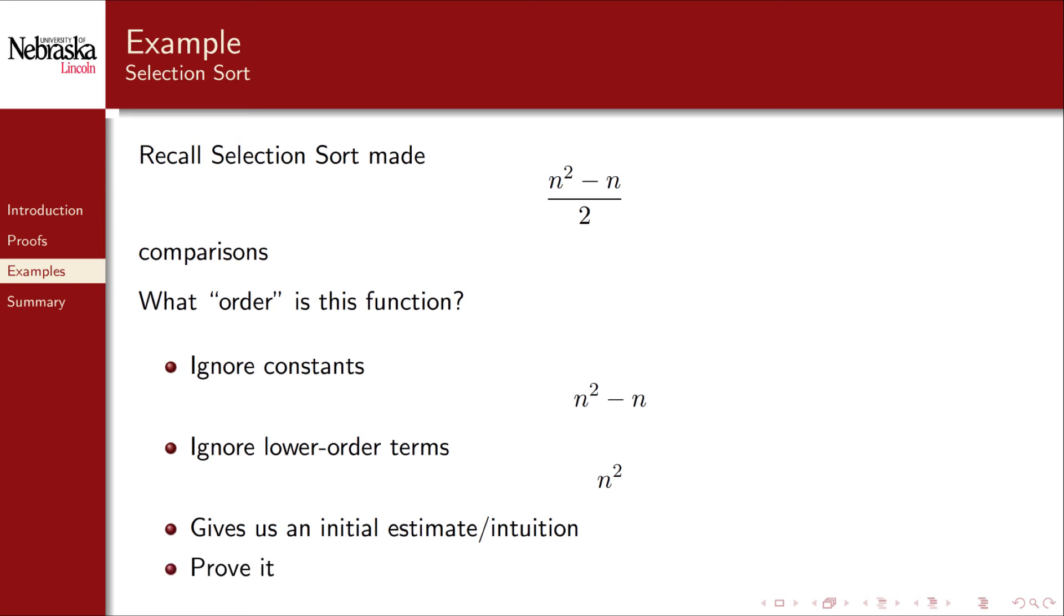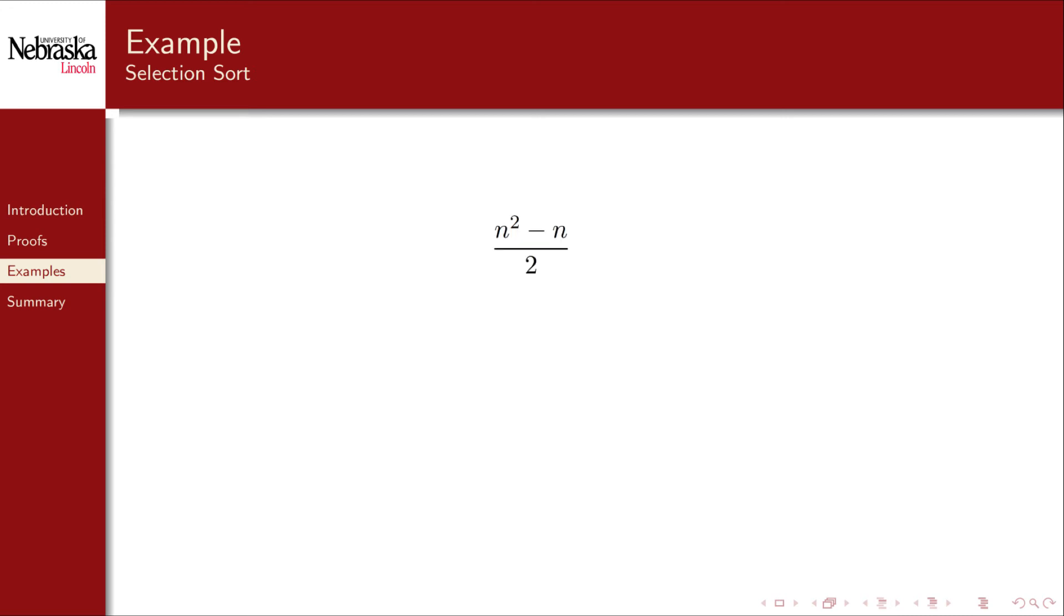However, we still need to prove it. Again, starting with the function, we can make it bigger by multiplying it by two and removing the denominator. Since the linear term is subtracted, adding it back in makes it bigger and simplifies the equation to what we had before. Thus, for c equals one and n naught being zero, the inequality holds and selection sort is big O of n squared, an inefficient quadratic sorting algorithm.